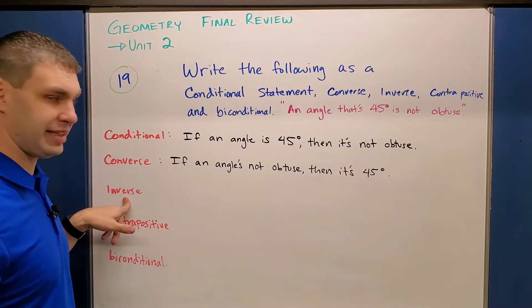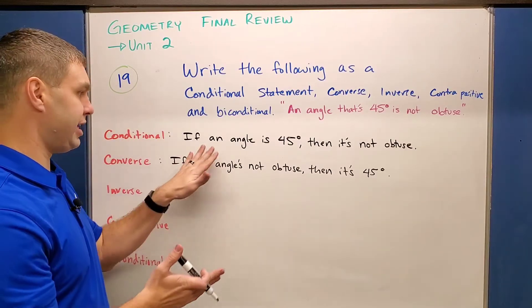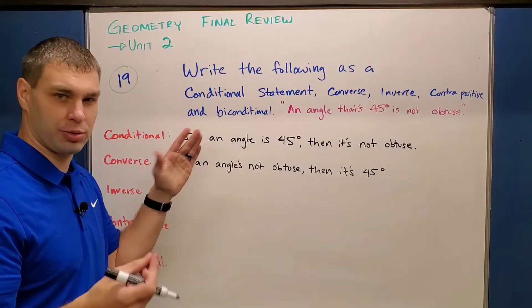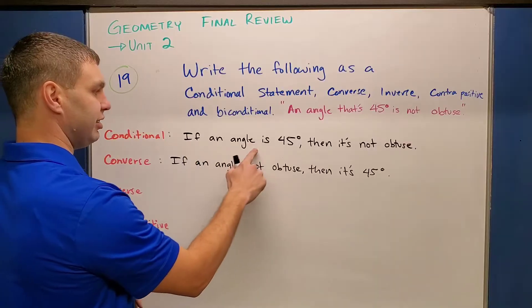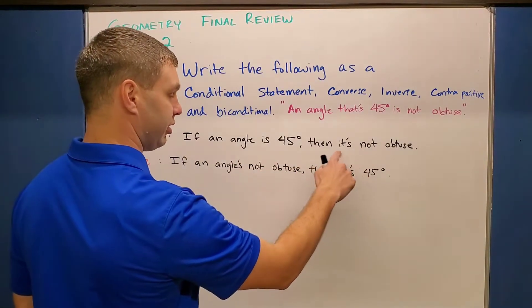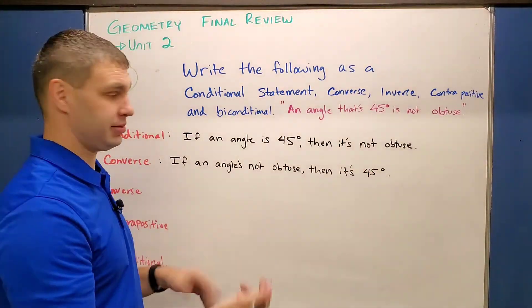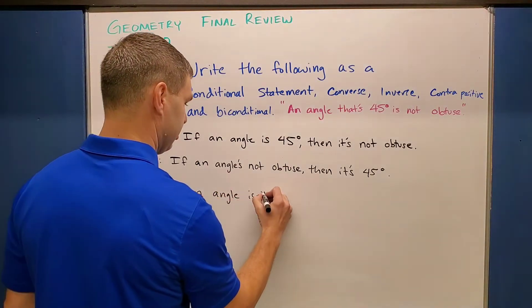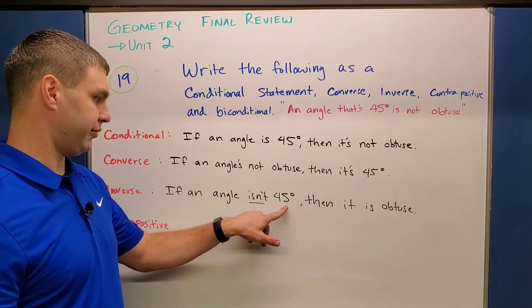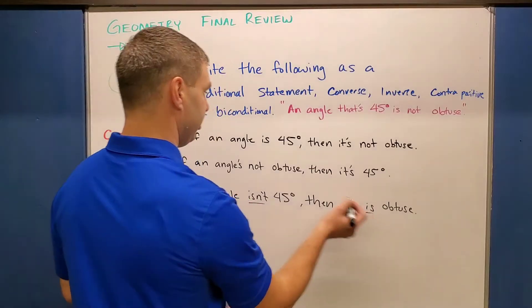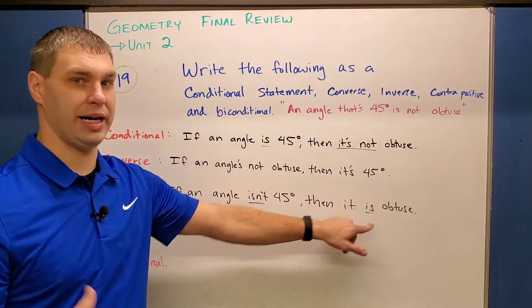The third thing it wants us to do is write the inverse. What the inverse is going to do is negate both our hypothesis and our conclusion, but it's going to keep it in the original order. So by negate, I mean add words like not, or isn't, or won't be, things like that. So for this one, it'd say something like if an angle isn't 45 degrees, then it is obtuse. Currently it says it's not, so we have to do the opposite of that, which in this case would be is. So for this sentence, it says if an angle isn't 45 degrees, then it is obtuse. You notice I switched my is and isn't, is not and is from my original statement.